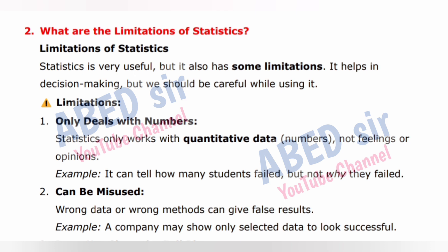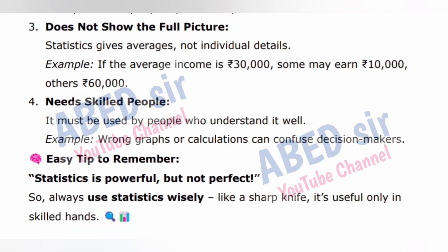Example: It can tell how many students failed, but not why they failed. Limitation 2: Wrong data or wrong methods can give false results. Example: A company may show only selected data to look successful. Limitation 3: Does not show the full picture. Statistics gives averages, not individual details. Example: If the average income is 30,000 rupees, some may earn 10,000 rupees and others 60,000 rupees.